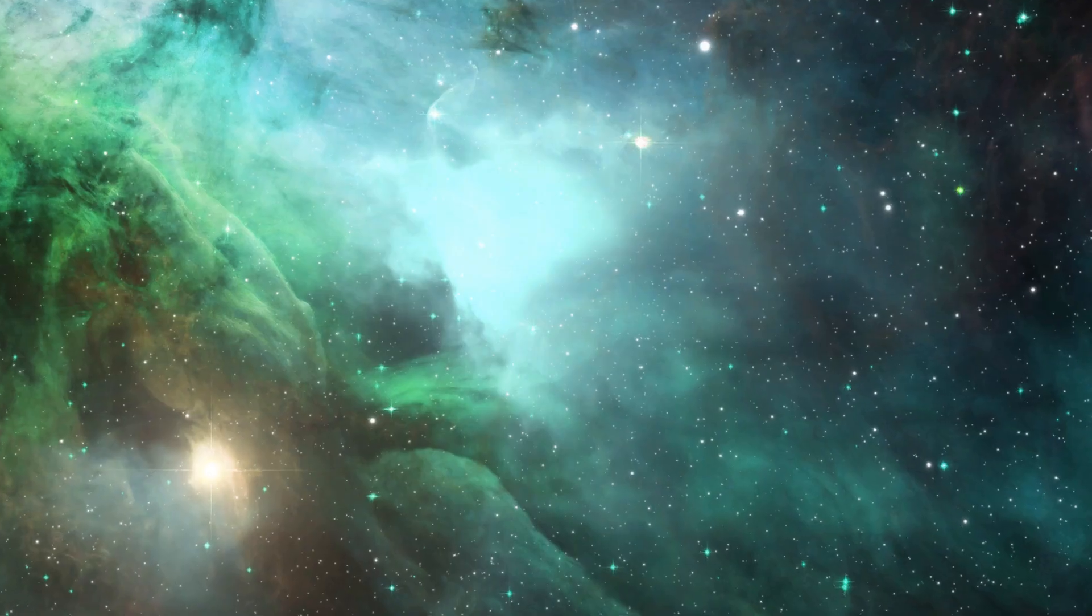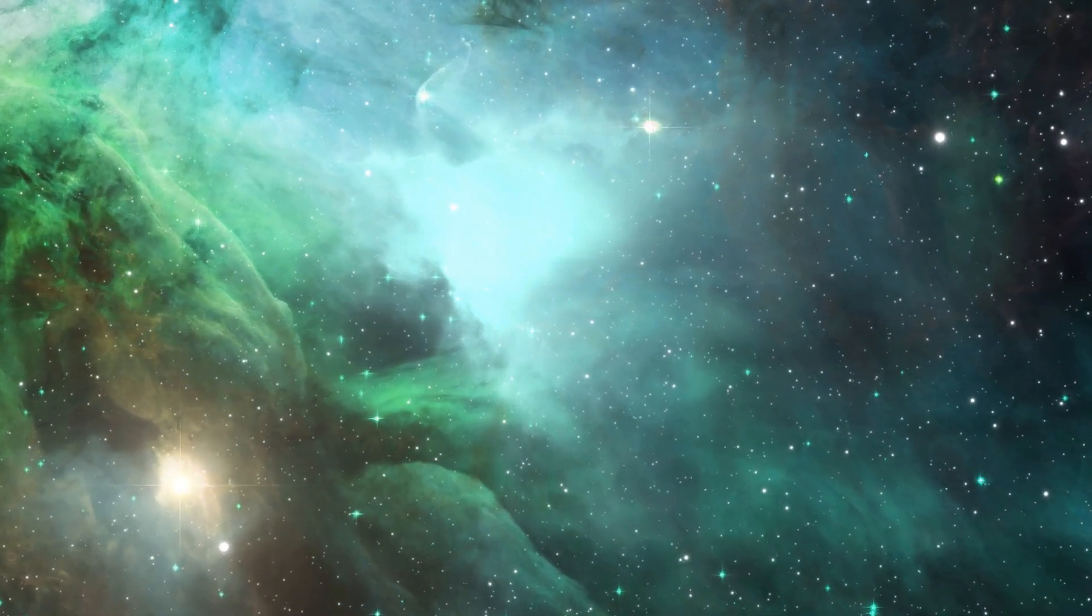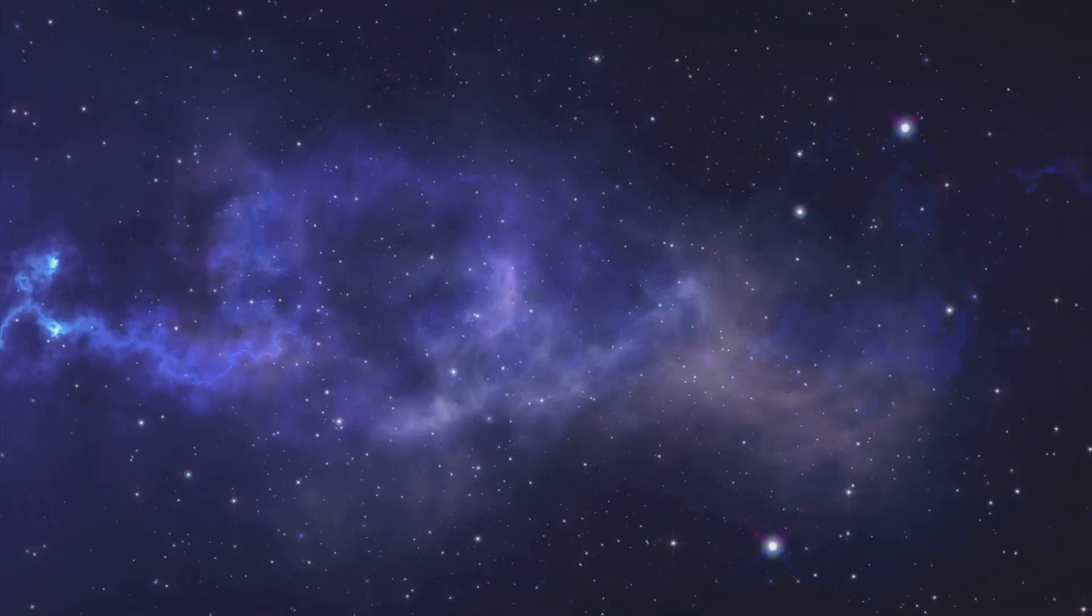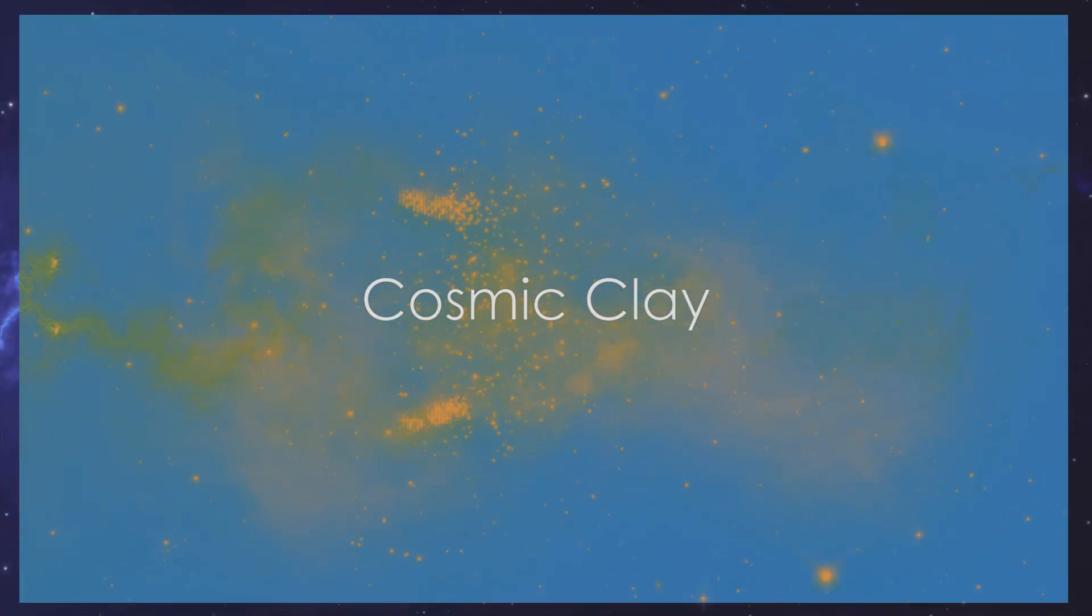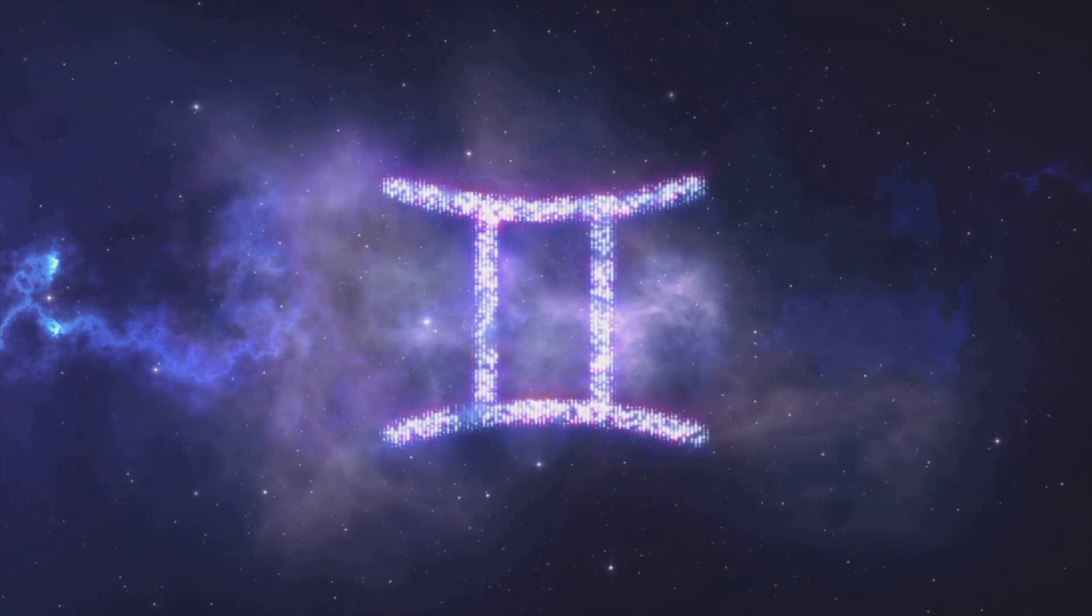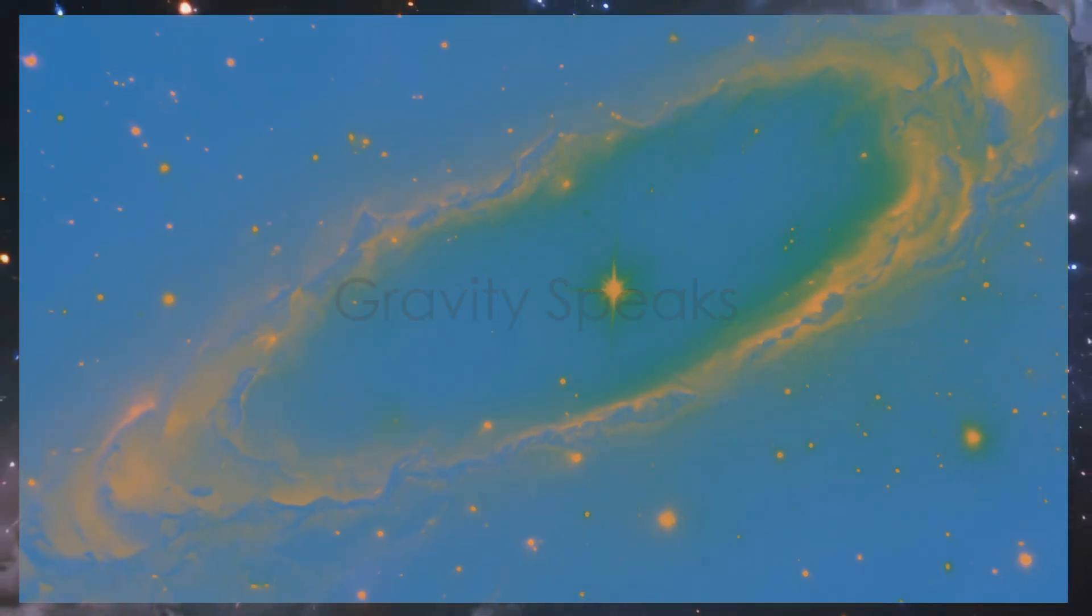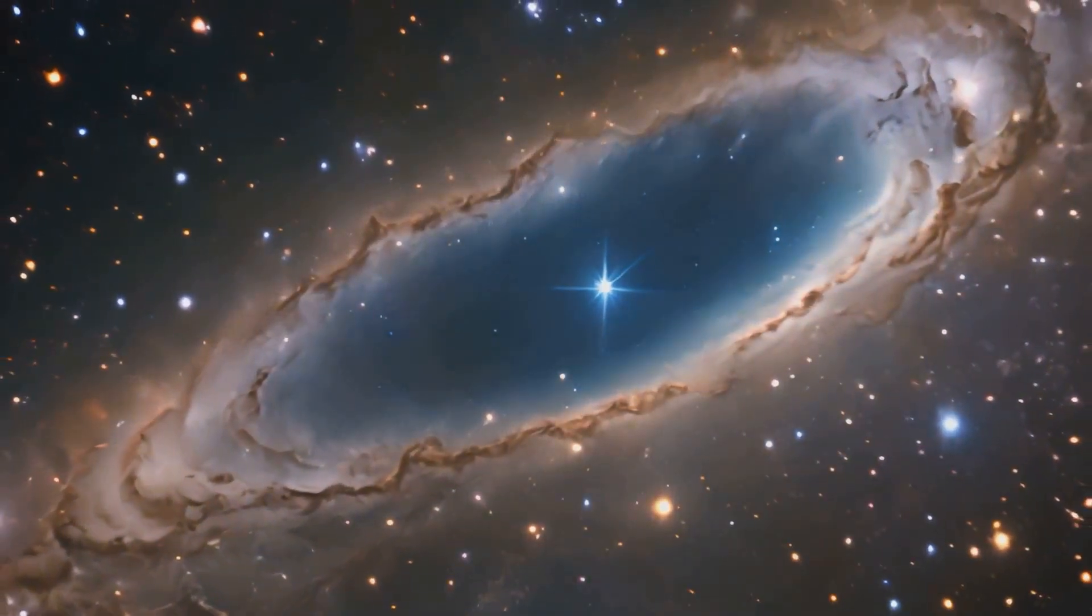4.6 billion years ago, a swirl of gas and dust spiraled around a young flaming star—our sun. Gravity took its brush and began to paint planets from cosmic clay. I pull all things to form. I bind the chaos into shape.